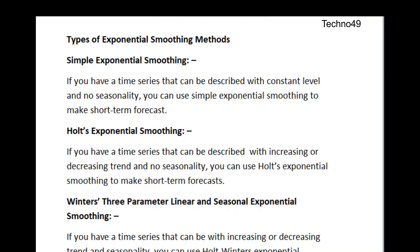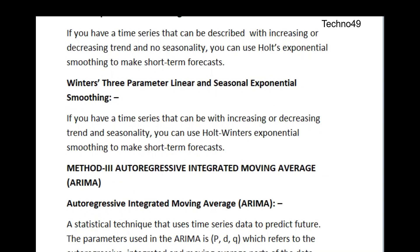The third one is the Holt-Winters three-parameter linear and seasonal exponential smoothing. In this case, if you have historical data in front of you that is increasing or decreasing, plus you also have seasonality, you can use Holt-Winters exponential smoothing to make short-term forecasts. In this three-parameter linear and seasonal exponential smoothing, the data would be increasing or decreasing and there would also be seasonality. We smooth out the data using this method to get at least a good forecast from the historical data.